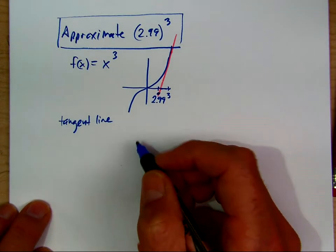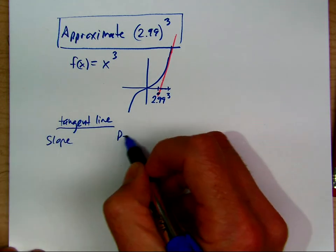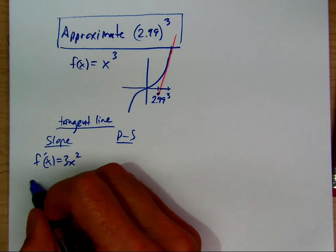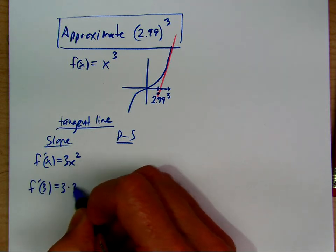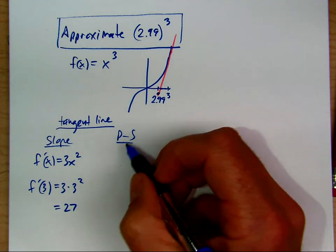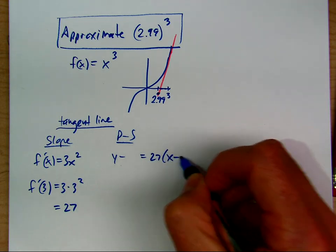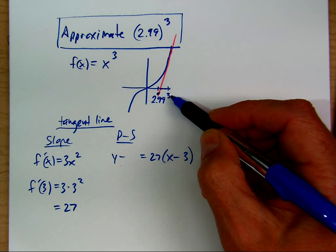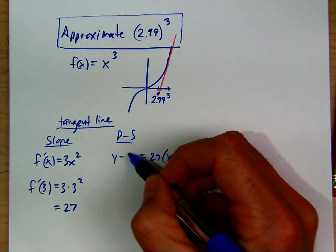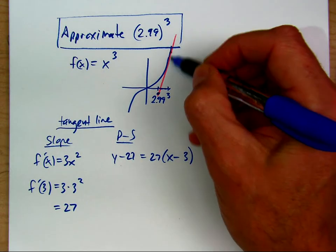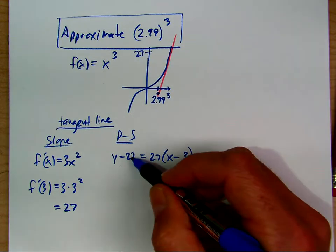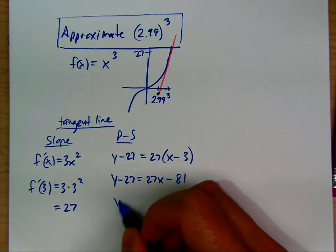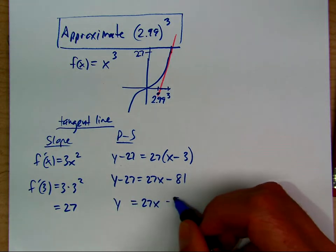For the tangent line, we need the slope and point-slope formula. The slope is 3x squared, and the slope at 3 is 3 times 3 squared, which is 27. Using the point-slope formula, we have 27 times (x minus 3), and the y value at 3 is 27 since 3 cubed is 27. The slope is 27. Simplifying gives us 27x minus 81 plus 27, so the tangent line is 27x minus 54.